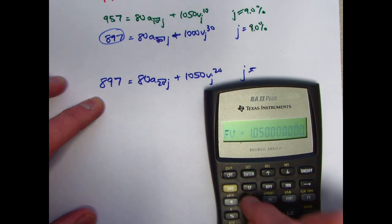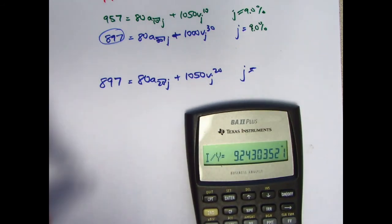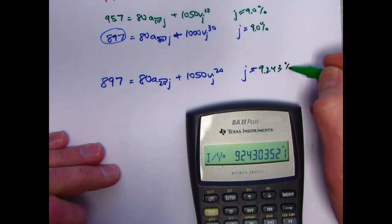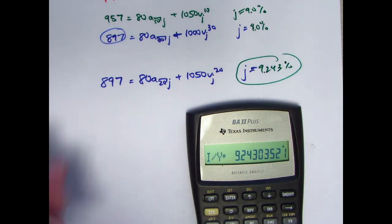1,050 is FV, compute interest per year. Yes, it is higher than 9%. It's 9.243%. And that is the correct answer.